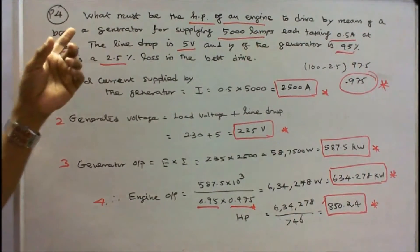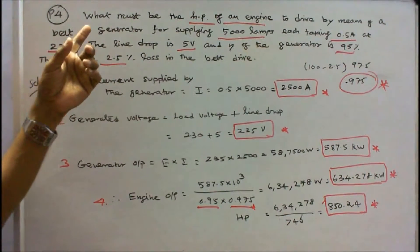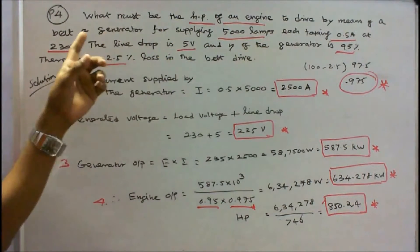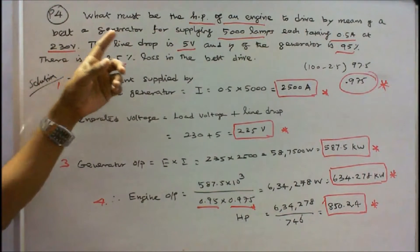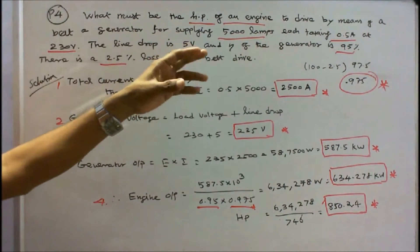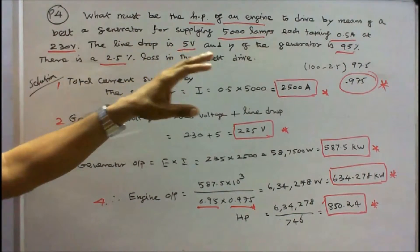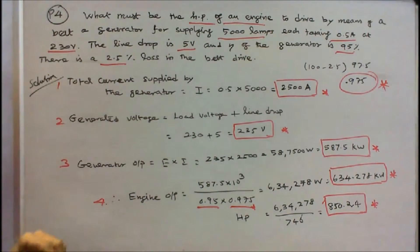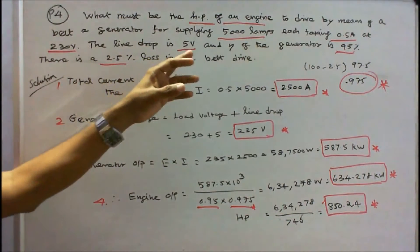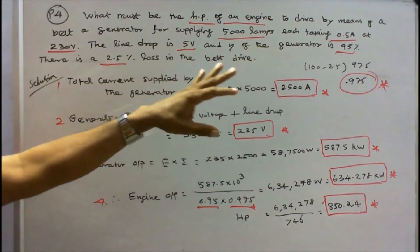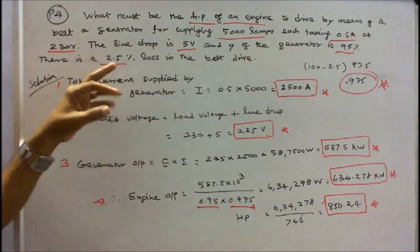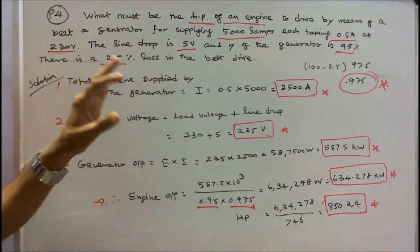Problem 4: What must be the horsepower of an engine to drive, by means of a belt, a generator for supplying 5,000 lamps, each taking 0.5 amps at 230 volts? The line drop is 5 volts, efficiency of the generator is 95%, and there is a 2.5% loss in the belt drive.